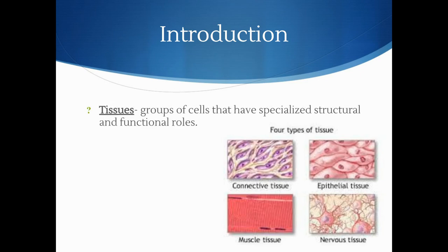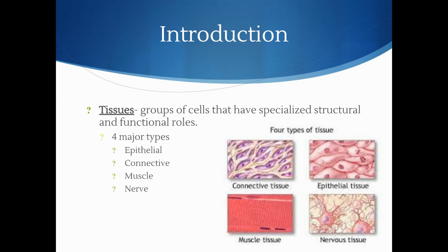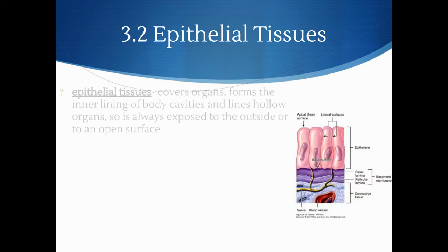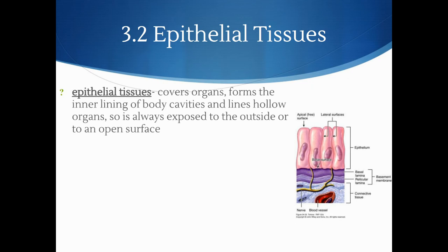Tissues are groups of cells that have specialized structural and functional roles. There are four major types: epithelial, connective, muscle, and nerve. Although the cells of different tissues vary in size, shape, arrangement, and function, those within a specific type of tissue tend to share very similar characteristics. Epithelial tissues cover organs, form the inner lining of body cavities, and line hollow organs. It's always exposed to the outside or to an open surface.